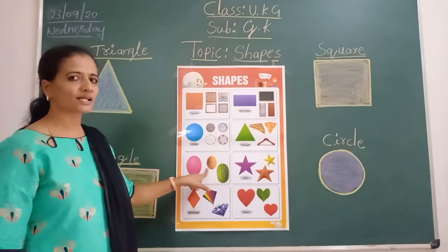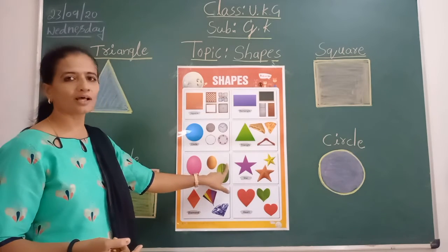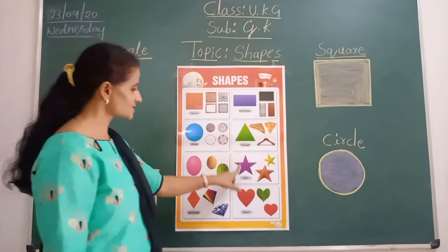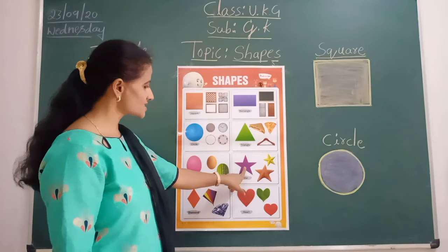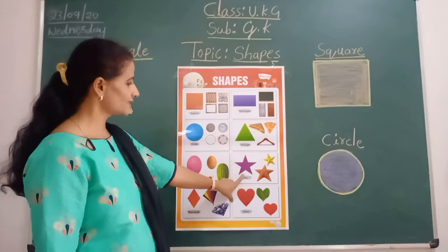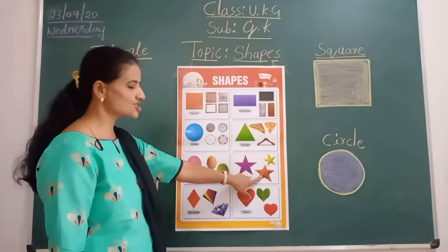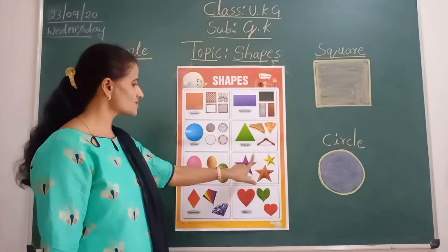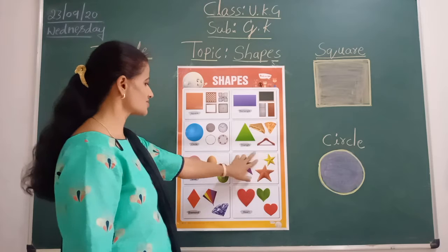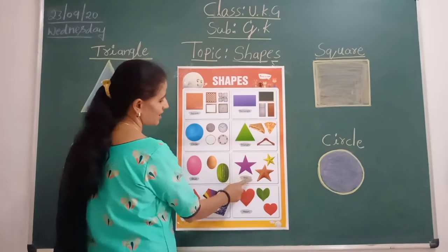See, what is this? Watermelon — fruit. Watermelon also oval shape. Next: star. See this chart — star. Which color, children? Purple color. So, star — starfish. Have you seen? Starfish also star shape. What is the spelling of star, children? S-T-A-R.